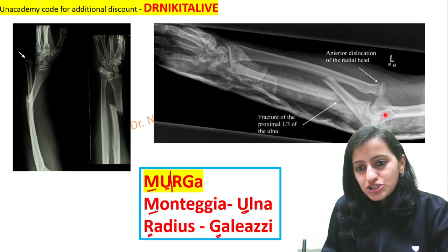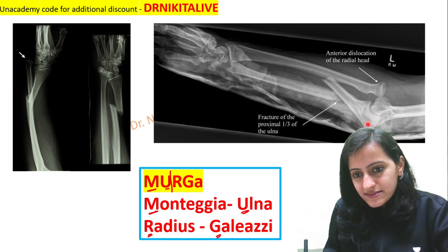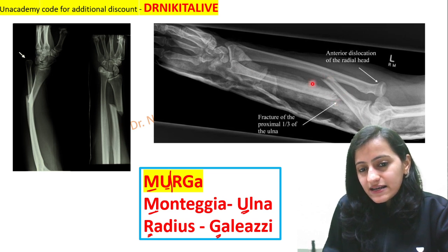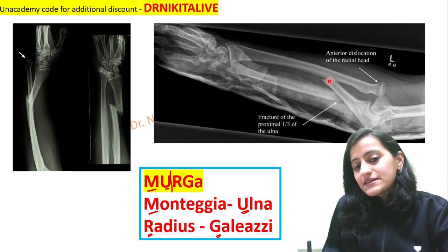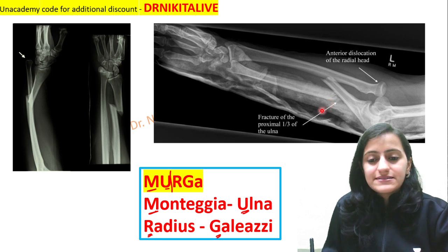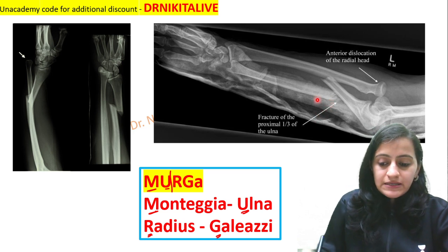Here in this image, look at this — this is the olecranon process, so this is the ulna. The ulna is discontinued, meaning there is an ulna fracture. So this is Monteggia fracture.